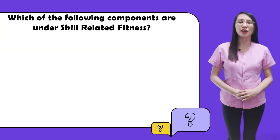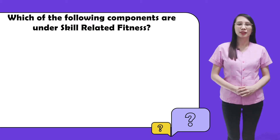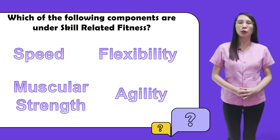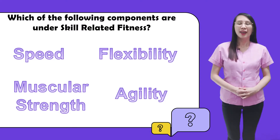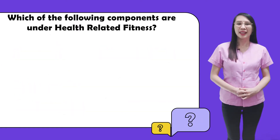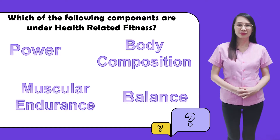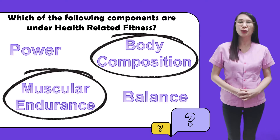Before we discuss our main lesson, let us first have a recap of our previous discussion. Let's try to answer these questions. Which of the following components are under skill-related fitness? If you answered speed and agility, then you are correct. Next, which of the following components are under health-related fitness? If you answered body composition and muscular endurance, then you are correct again.